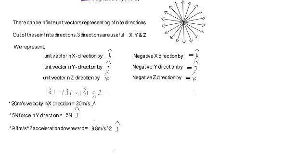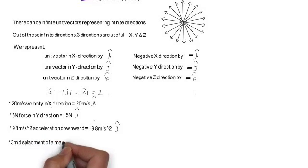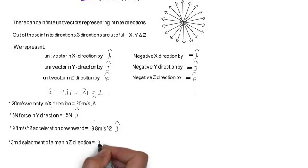A 9.8 meter per second squared acceleration downward can be represented as minus 9.8 meter per second squared j cap. The negative sign represents that the vector is in the downward direction — if the upward direction has been taken as positive, the downward direction must be taken as negative. A 3 meter displacement of a man in the z direction can be represented as 3m k cap, where 3m is the magnitude of the displacement and k cap indicates that the man has travelled in the z direction.